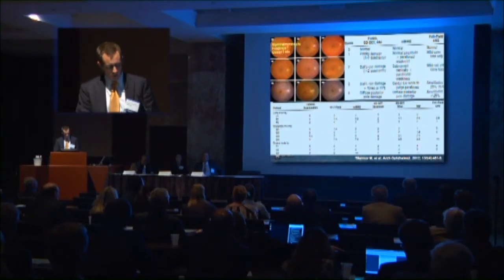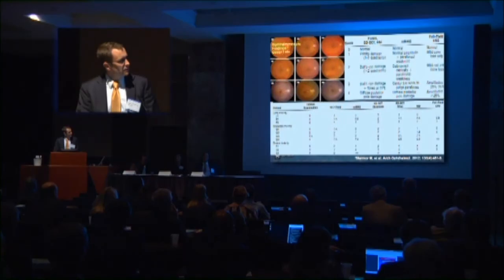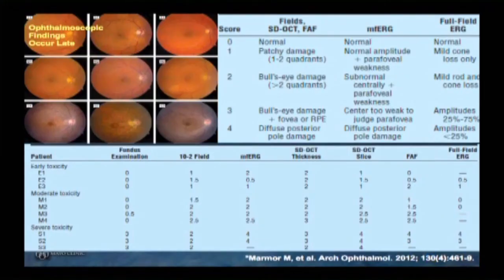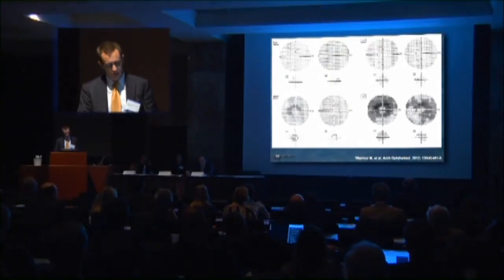A paper by Mike Marmer showed multimodality testing. We can pick up severe toxicity cases fairly easily. The challenge is catching patients as early as possible. With the white 10-2, taking even the smallest change as meaningful could catch some early toxicity cases, but it's common for normal patients to have scattered spots. Multifocal ERG is very good at catching some of these patients. SD-OCT can show parafoveal thinning and anatomic changes. Autofluorescence is variable — sometimes good evidence early, sometimes not. This shows the spectrum of perimetry changes, with subtle early findings in the right eye becoming quite obvious as toxicity progresses.